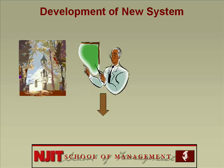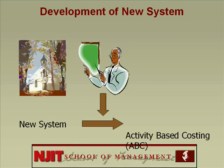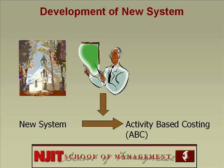Around 1985, Robert Kaplan from Harvard University came up with a new system to solve this problem. Working from his house in the rural countryside, he came up with a new system called activity-based costing. Kaplan was a very modest individual and didn't call the new system by his name. He called it activity-based costing — now it goes by the acronym ABC.